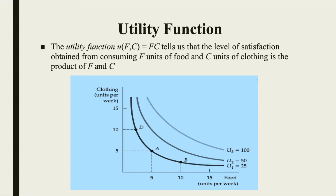At point B, U(f,c) = 10×2.5 which equals 25, where units of food is 10 and units of clothing is 2.5. The indifference curve is also known as iso-utility curve as all the points on the indifference curve have the same level of utility or satisfaction, such as the points A, B, and B.